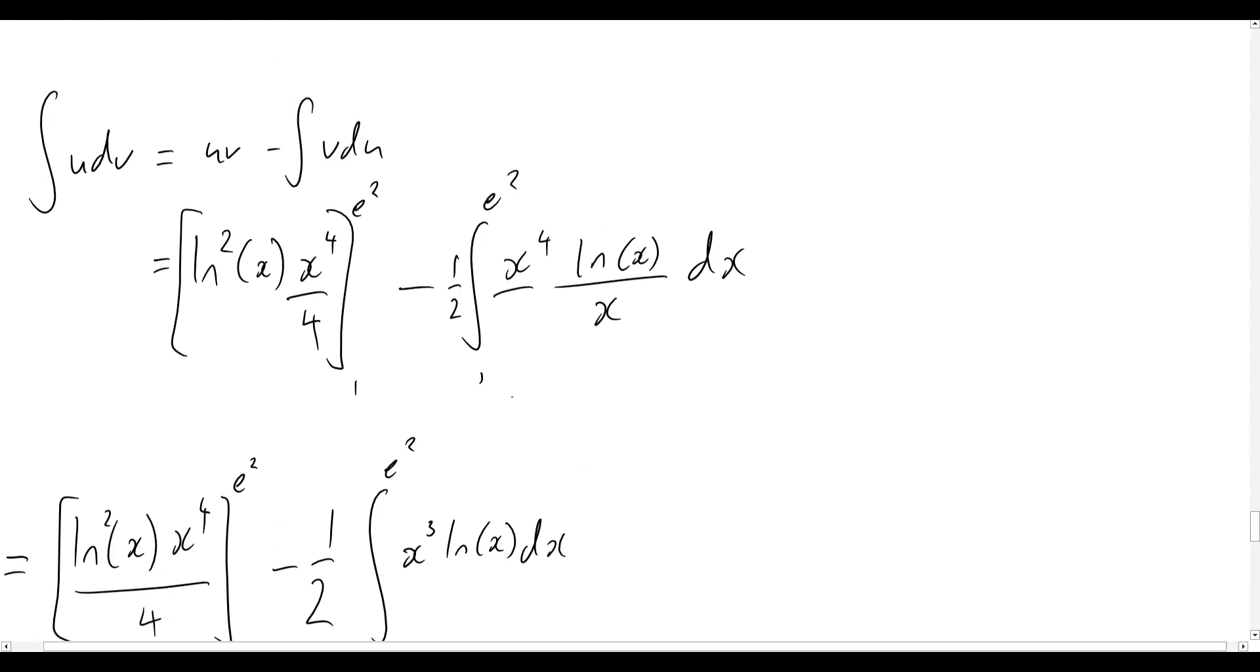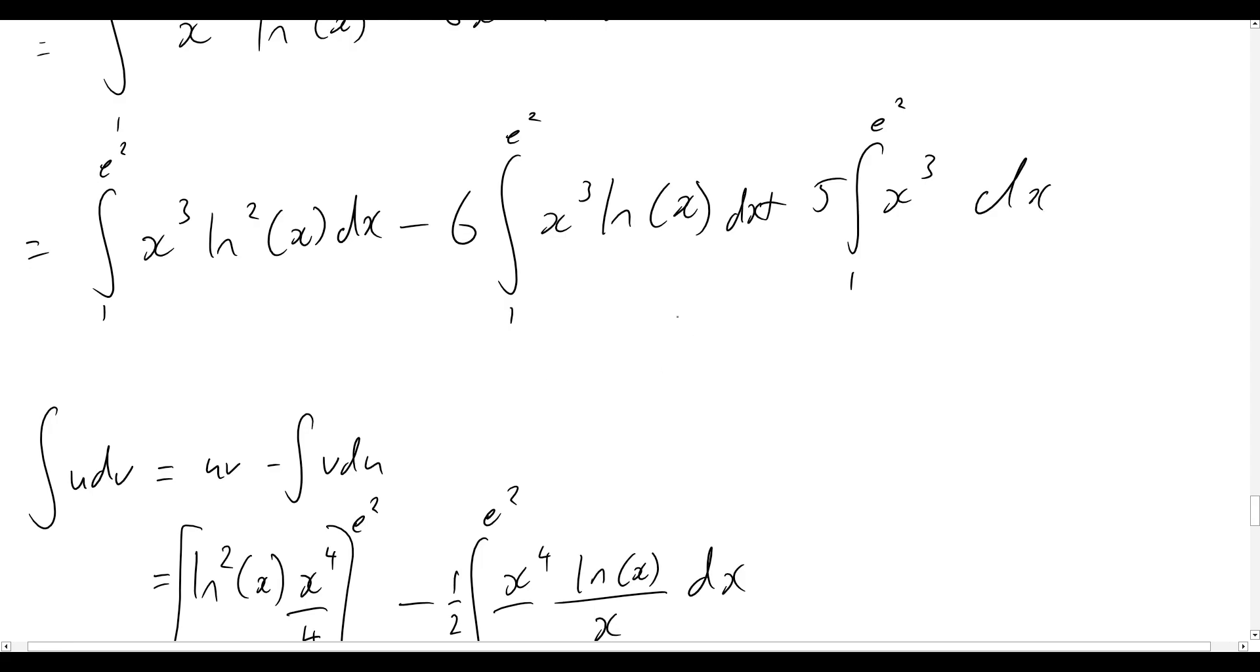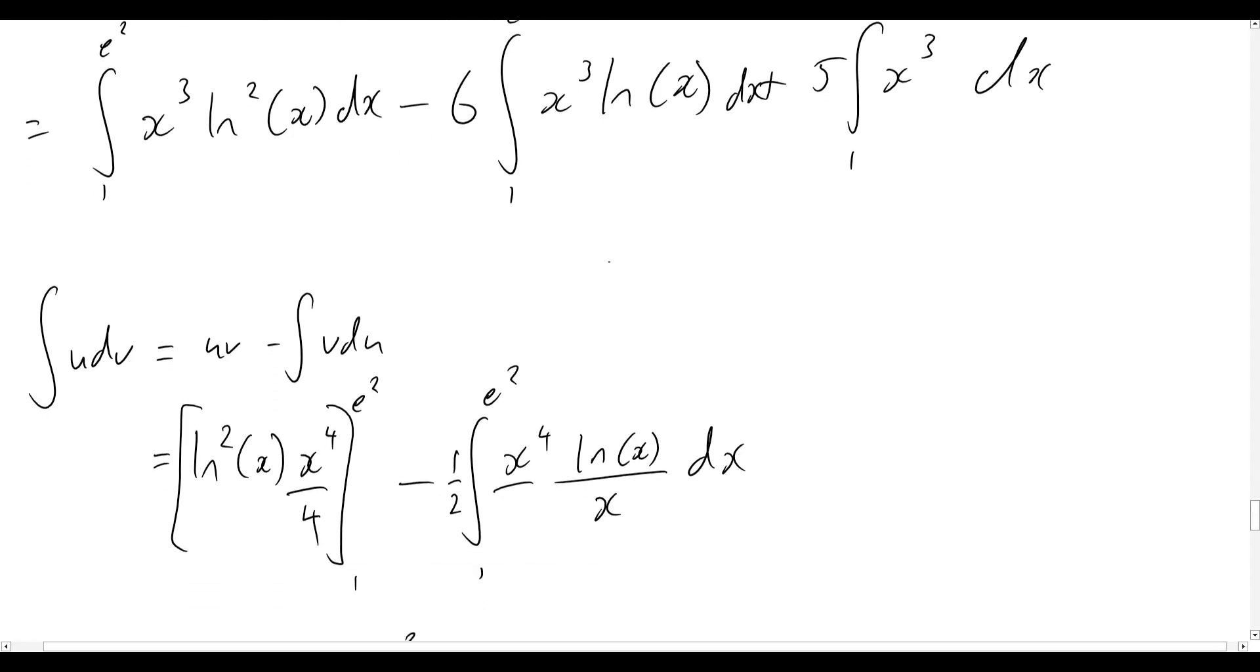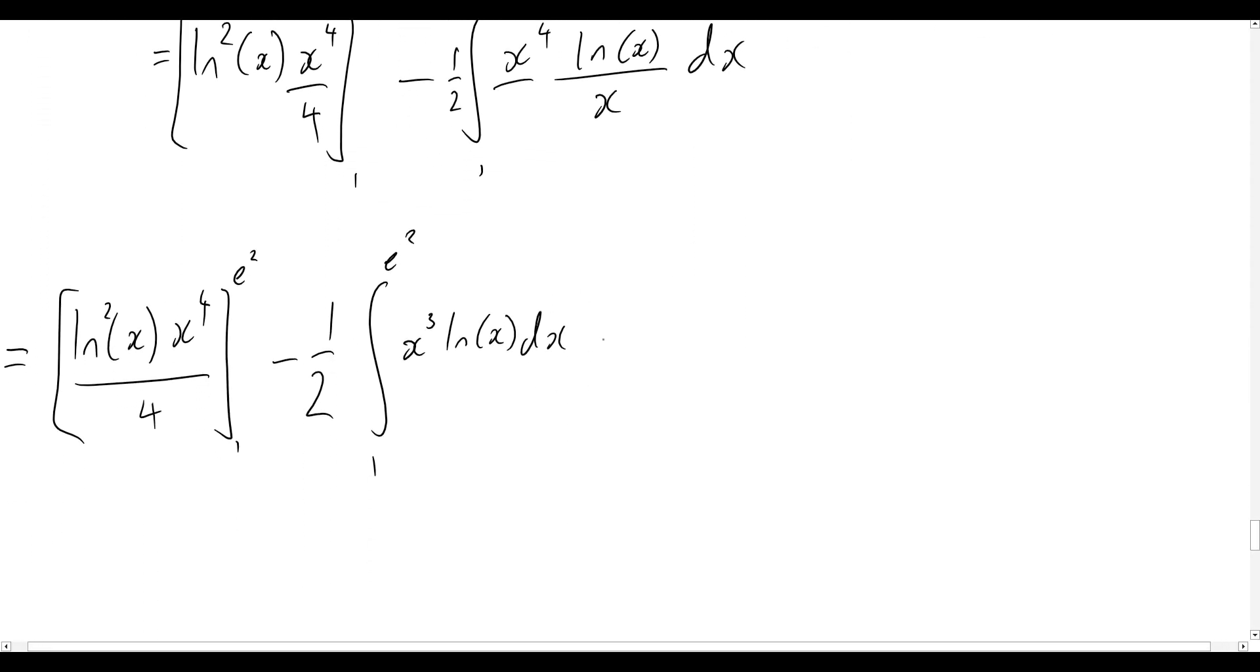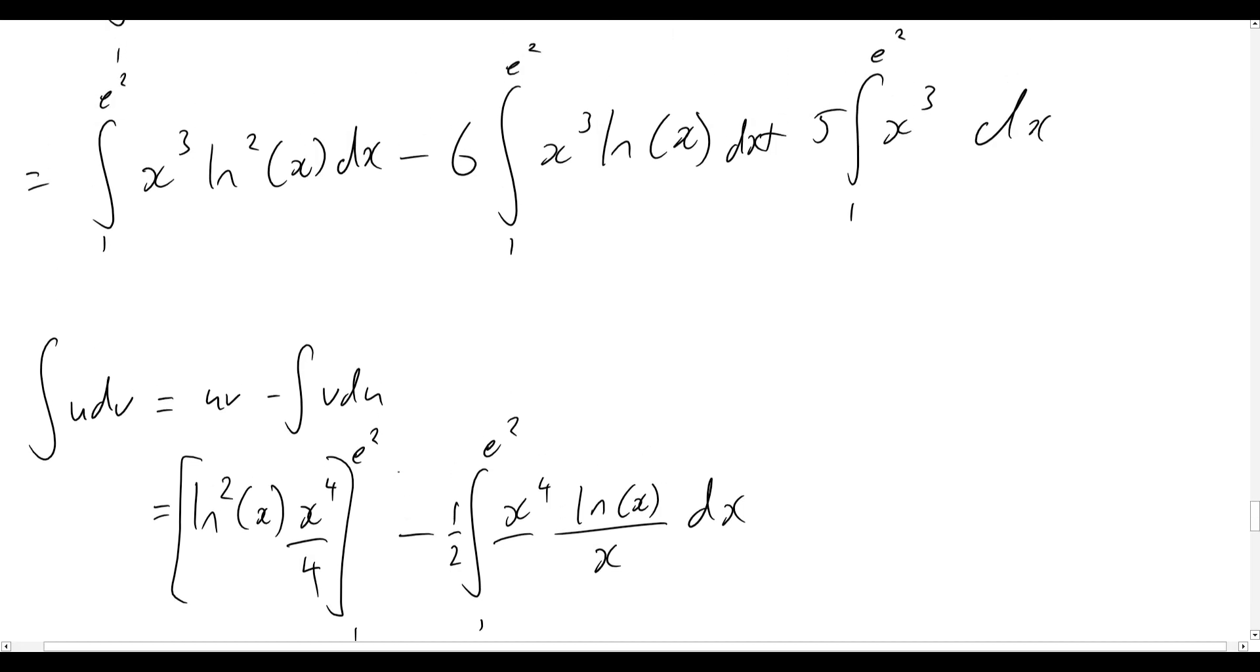And now let's see, what else did we have from our problem up above? Well, we had minus 6 times the integral from 1 to e squared of x cubed natural log of x dx. So that is, in fact, the exact same integrand as we have right here. So we know that we can actually rewrite those together.